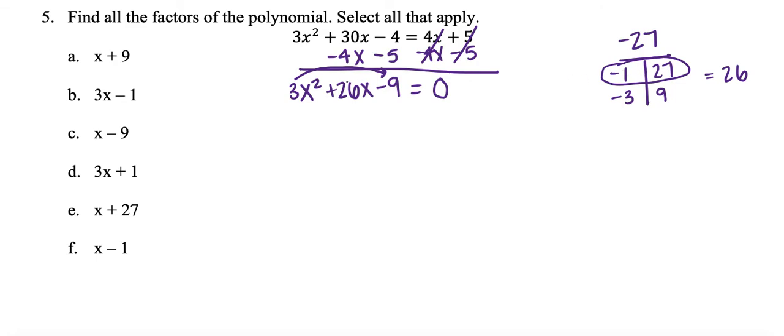Now I'm going to take those two numbers and split my middle term. So I have a negative x plus 27x. It's really important that you put that x there with it because it is splitting this x term. And I'm going to bring down my first and my last term.